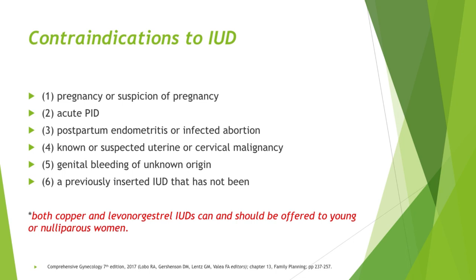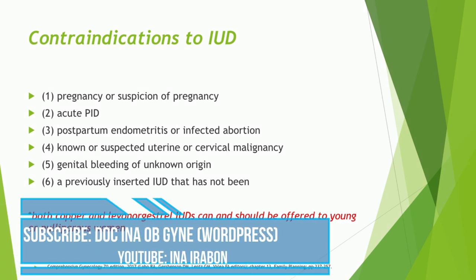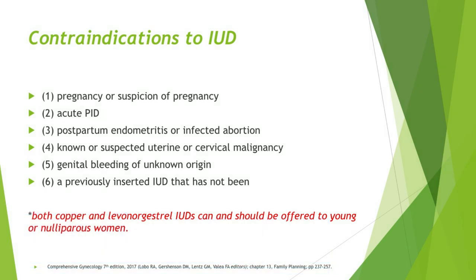Contraindications to IUD include: pregnancy or suspicion of pregnancy; infection such as acute PID, postpartum endometritis, or infected abortion; known or suspected uterine or cervical malignancy; genital bleeding of unknown origin; and a previously inserted IUD that has not been removed. Both copper and levonorgestrel IUDs can and should be offered to young or nulliparous women.